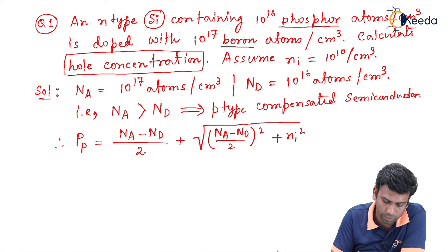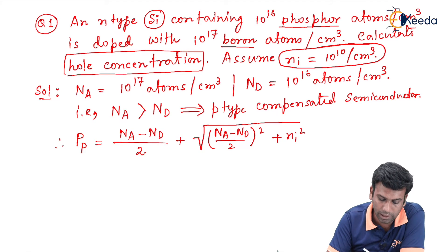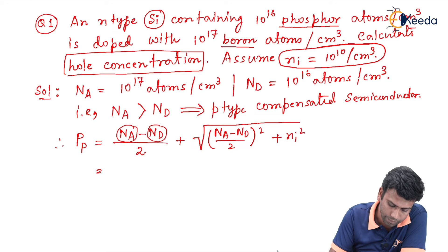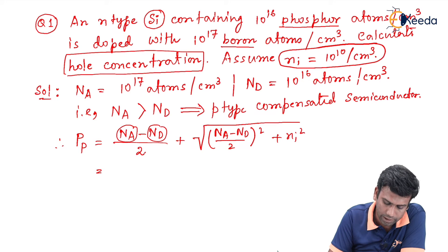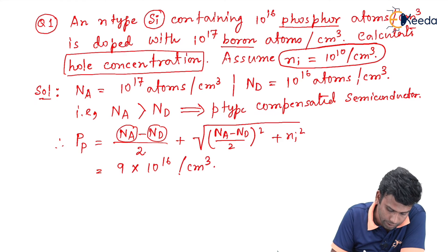We know the value of Na, we know the value of Nd, and we also know the value of Ni which is 10 to the power 10 per centimeter cube. Substituting all the values of Na, Nd, and Ni into the equation, we can find the value of P suffix P as 9 into 10 to the power 16 per centimeter cube. This is the majority carrier concentration for the p-type compensated semiconductor, which is the hole concentration.